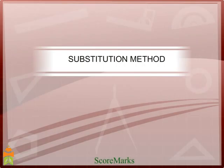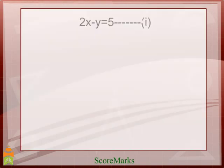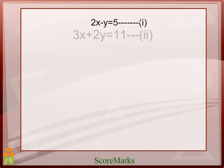In this method, we first find the value of one variable and substitute that value in the second equation. Let's understand with an example. We have the equations: 2x minus y is equal to 5, and 3x plus 2y is equal to 11.